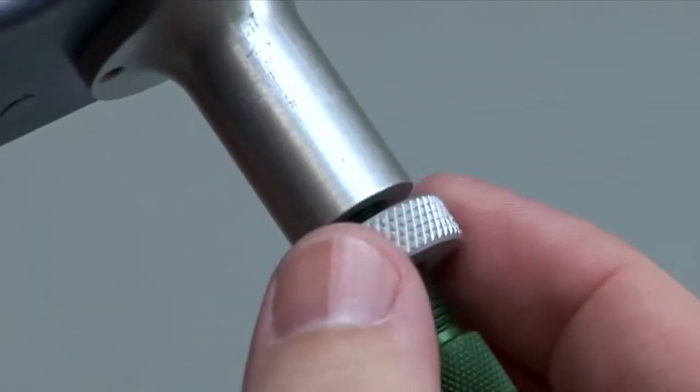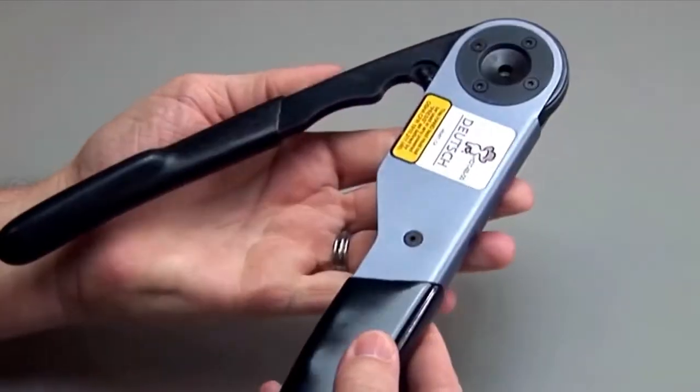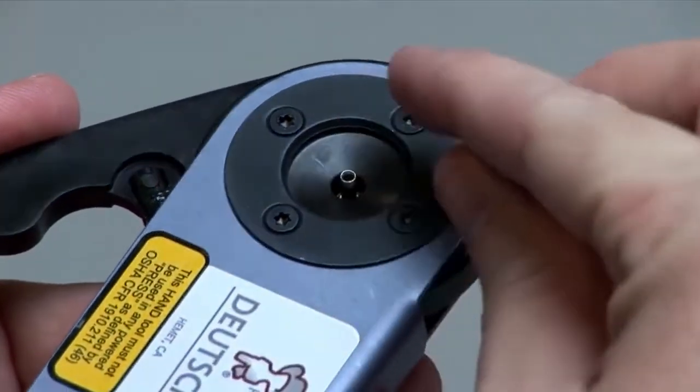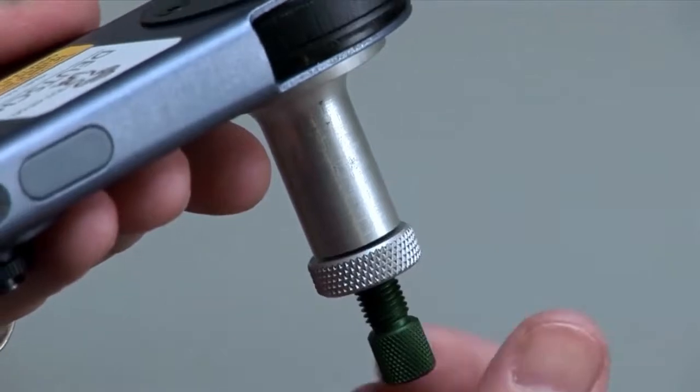Loosen the lock nut and turn the adjusting screw in until it stops. Insert the contact into the opening with the crimp barrel up. Turn the adjusting screw counterclockwise until the contact is flush with the indenter cover.